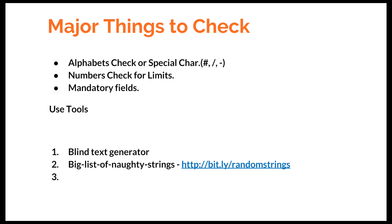The major things to check are: first, for a name field, check for alphanumeric and special character validation. Second, check the character limits — how many characters does it accept, and can it accept invalid characters? Third, check for mandatory field validation — for example, if an email address is required in a form, verify that it is enforced. These are the three main things to check before testing an input text field.